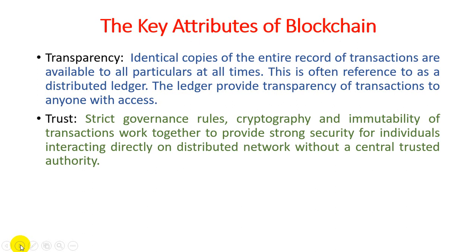The second important attribute is trust. Strict governance rules, cryptography, and immutability of transactions work together to provide strong security for individual interactions directly on distributed networks, without a central trust authority. This means customers deal directly with the organization without requiring any intermediate person to gain trust, because organizations always follow strict rules provided by the governance.